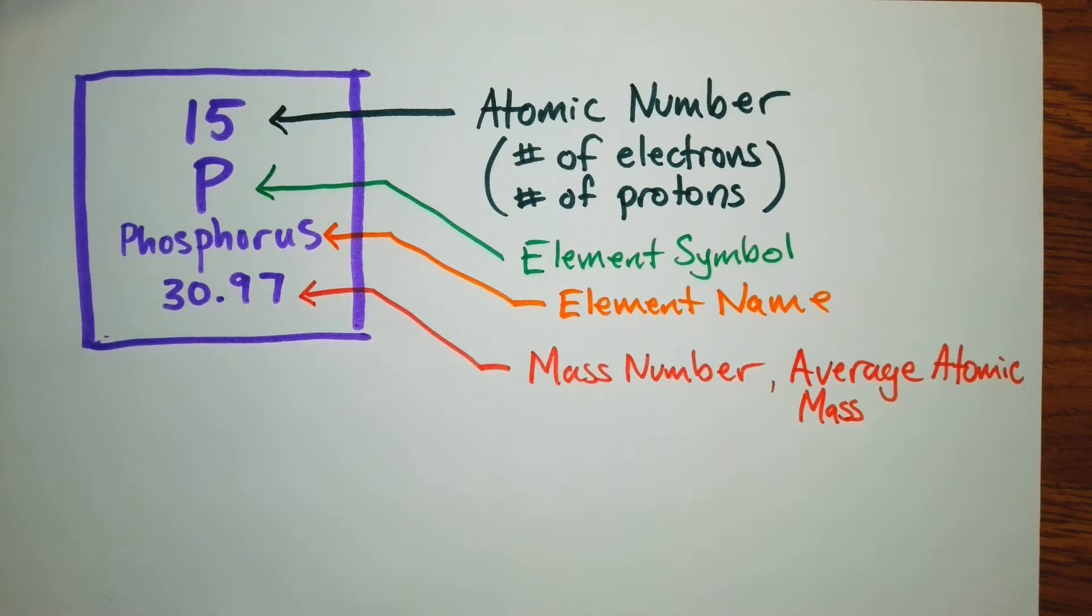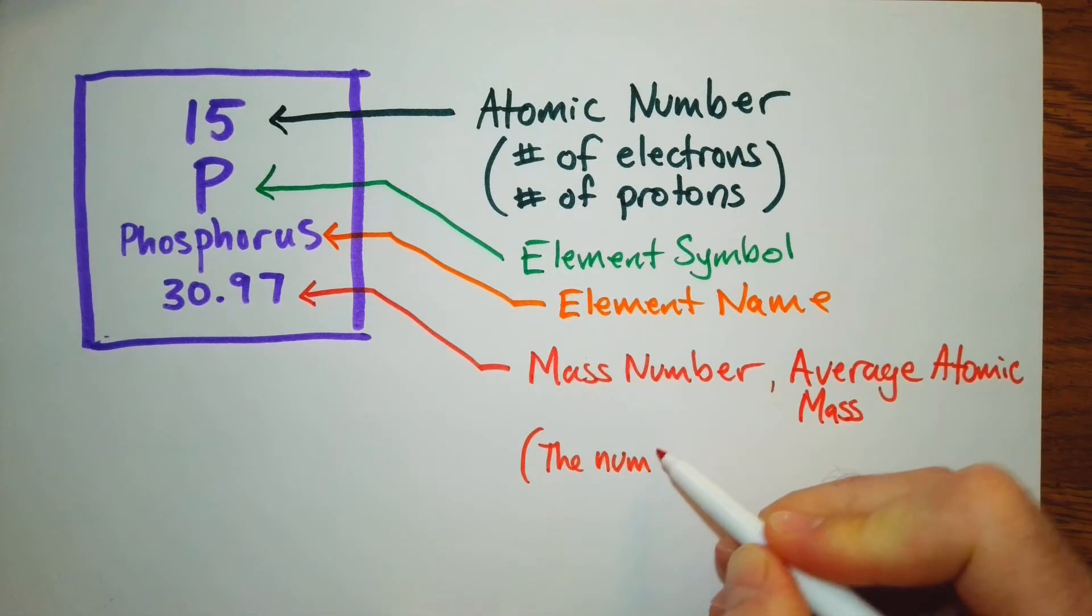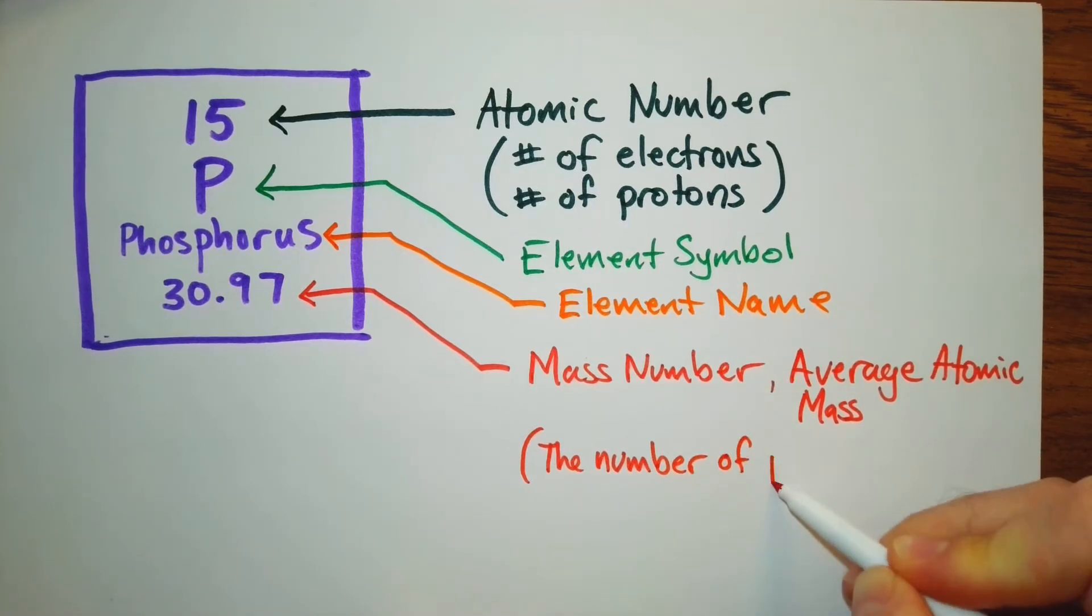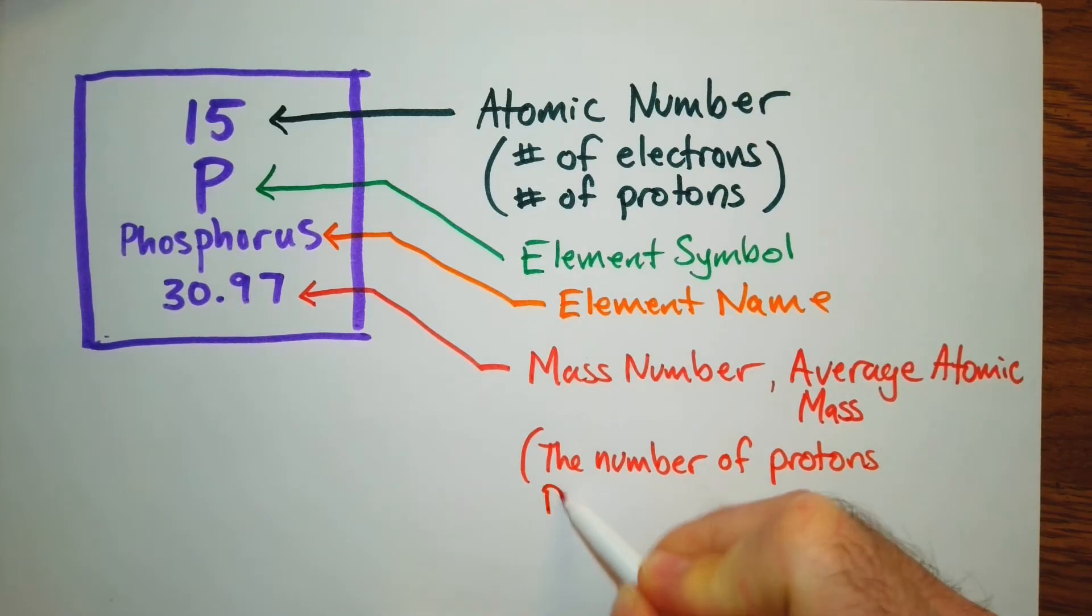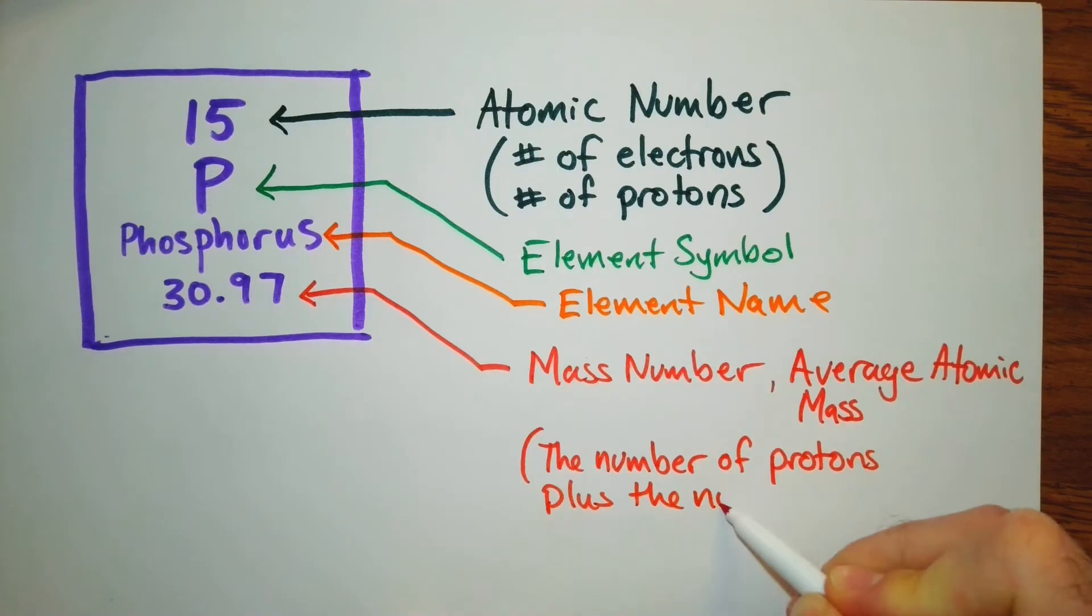Maybe you'll hear it called average mass number, but expect to be hearing those interchangeably. So what this tells us is, this gives us the number of protons plus the number of neutrons. So we'll have to calculate this one.